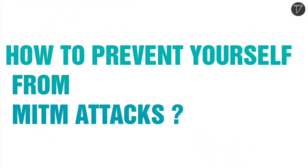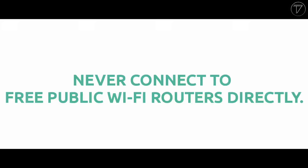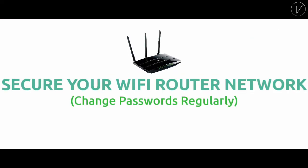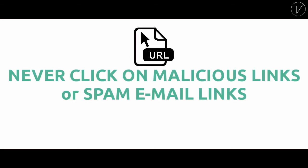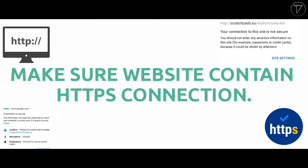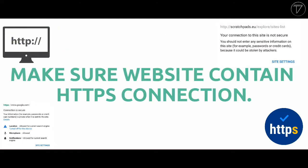How to protect yourself against a man-in-the-middle attack: Never connect to public Wi-Fi routers directly; if possible, install and use a VPN, because a VPN encrypts your internet connection on public hotspots to protect private data like passwords or credit card information. Secure your home Wi-Fi network and change your password regularly. Don't click on malicious links or unknown emails. Do not download pirated software or content. Only download content from trusted websites. Make sure that the websites you visit have HTTPS in the URL.